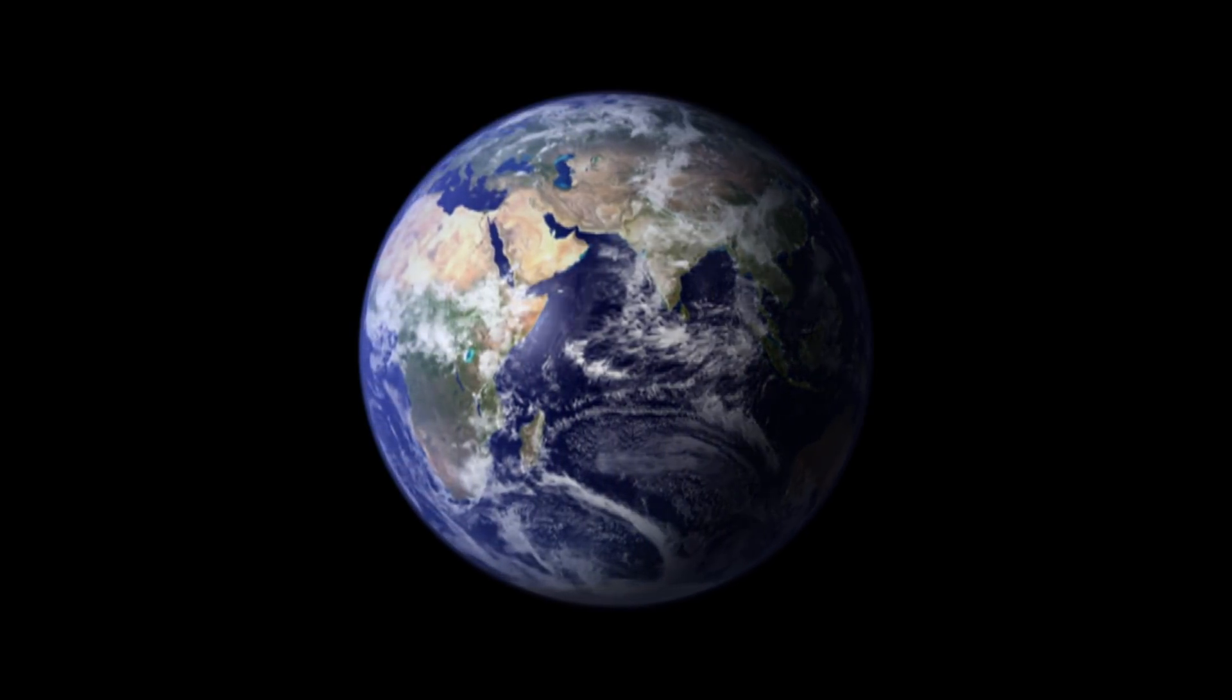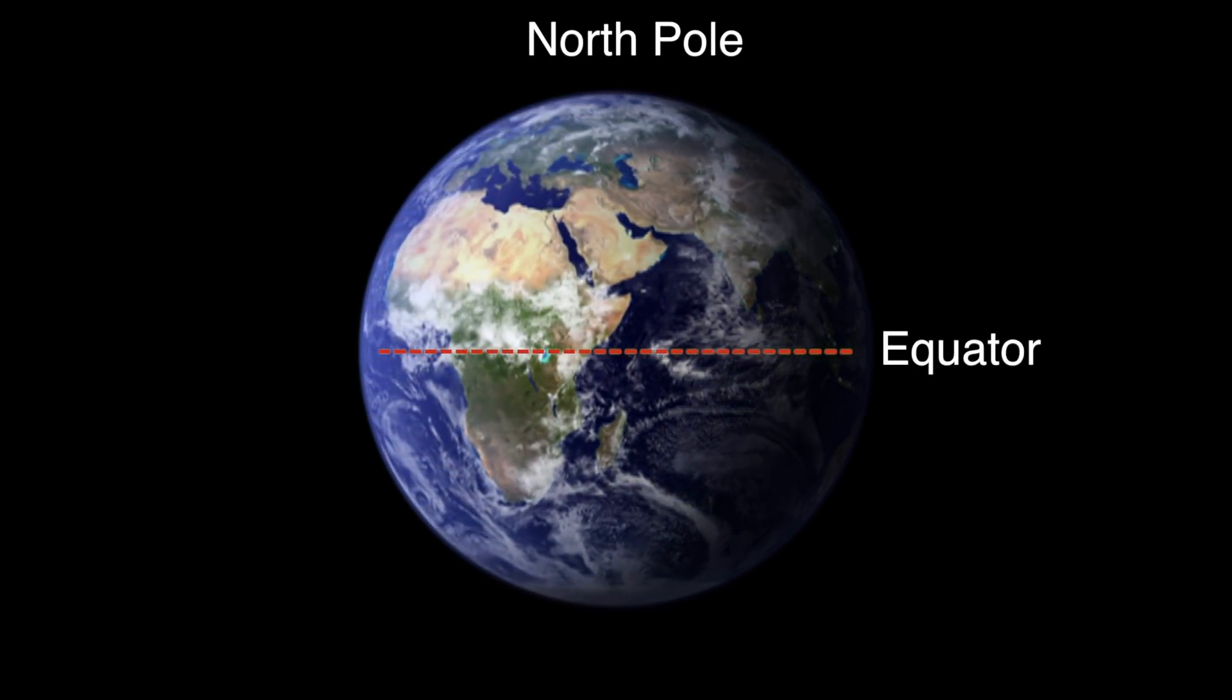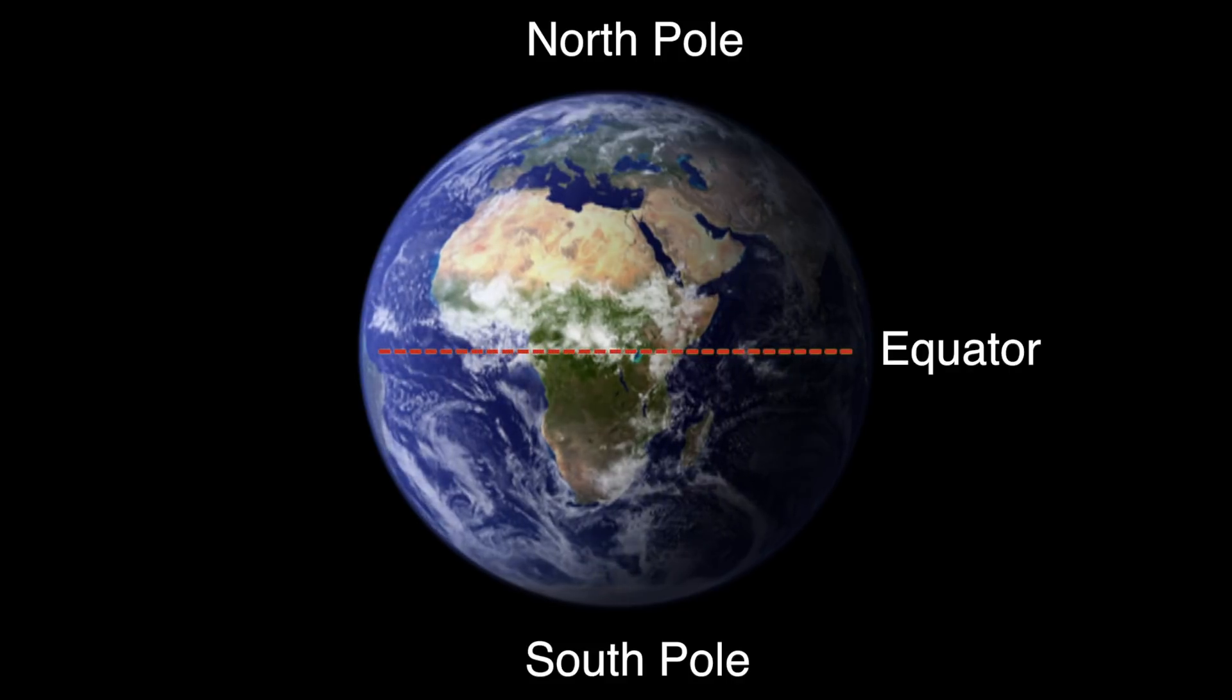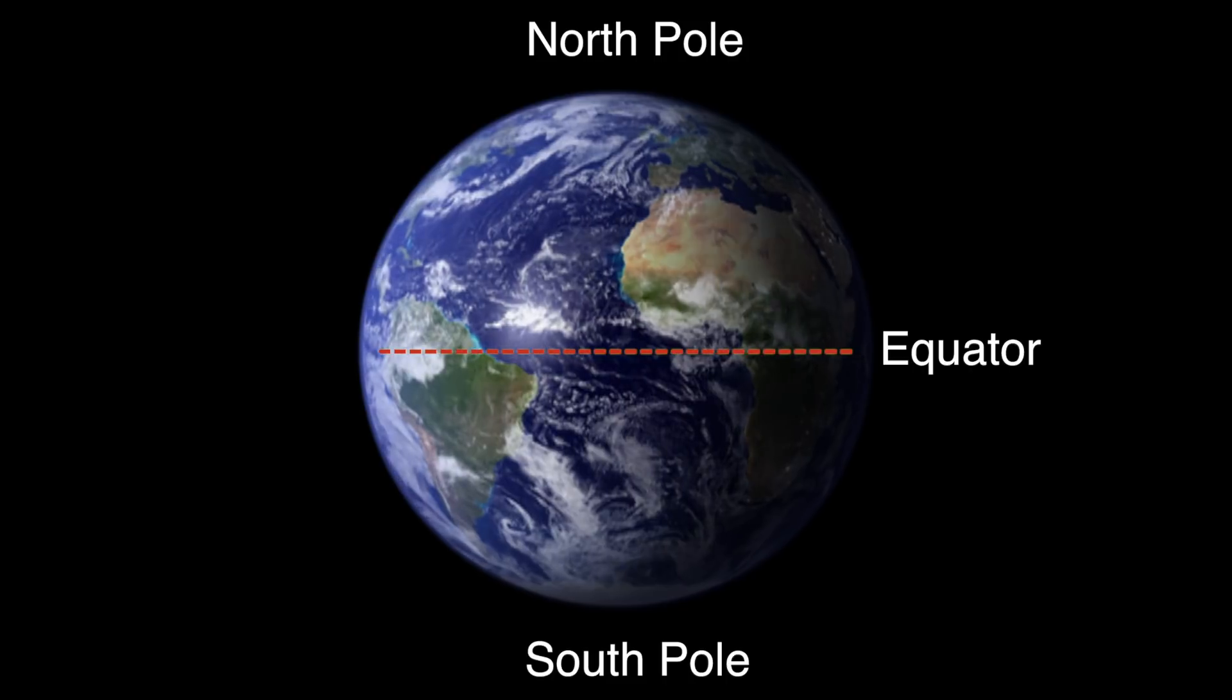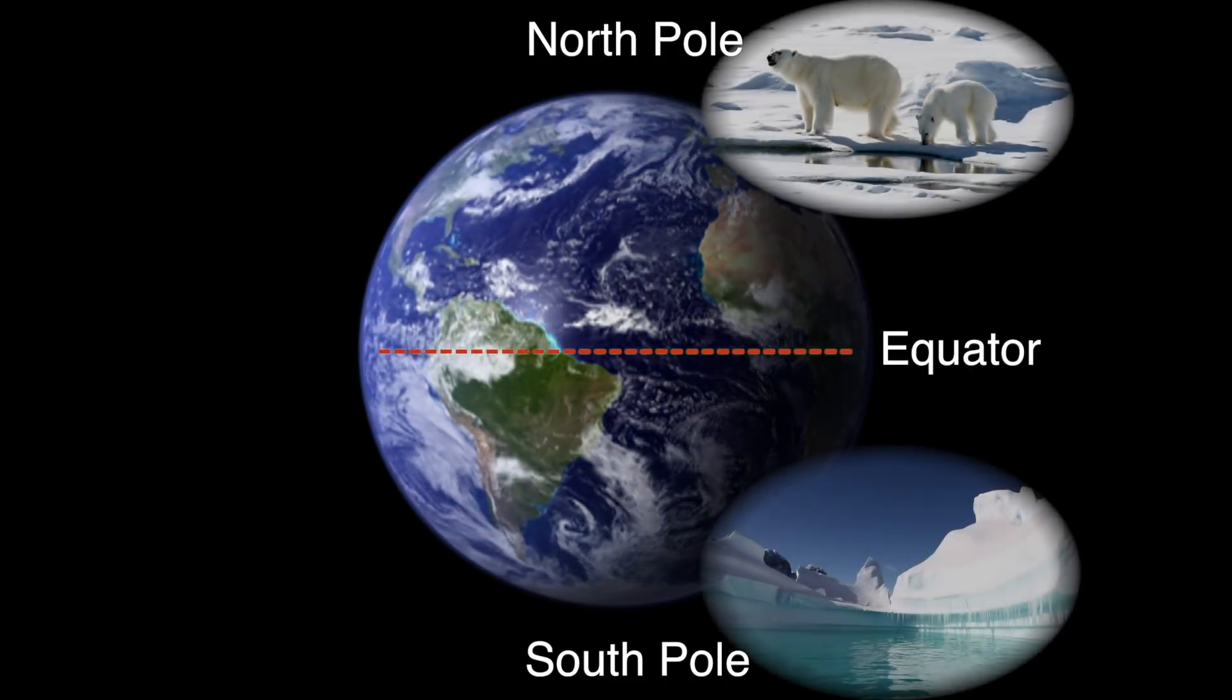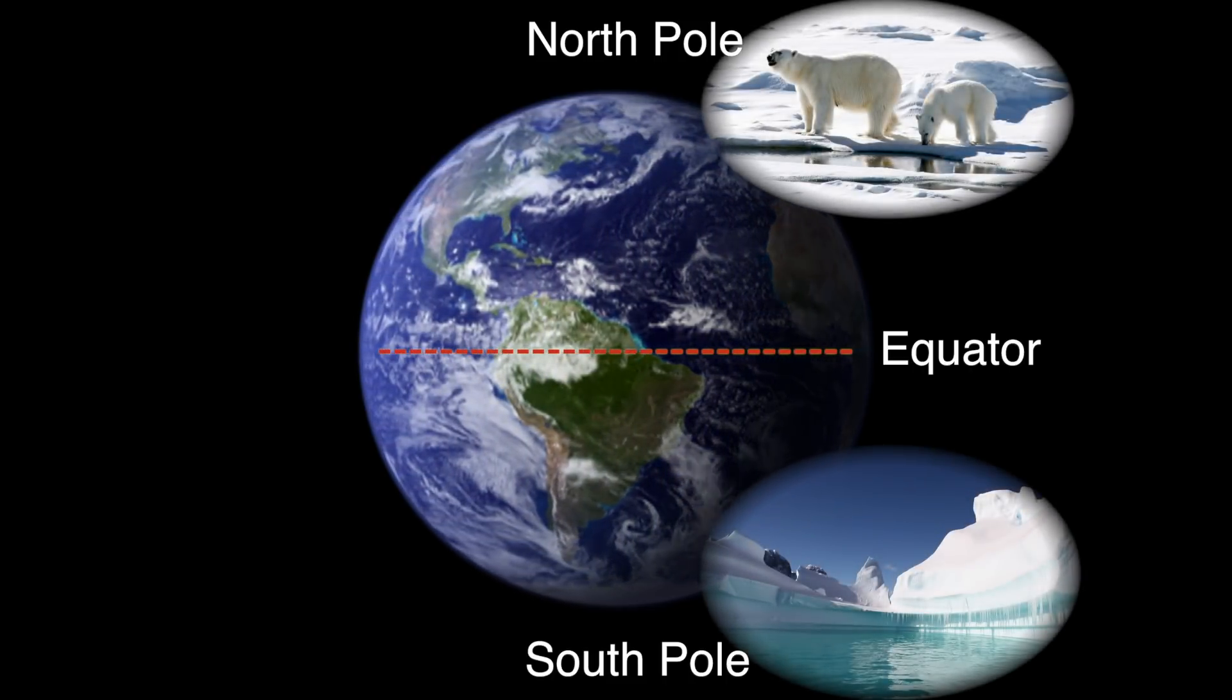Places by the equator, the line between the north half of the Earth and the south half, get much more sun than places by the north or south pole. That's why the equator is so warm, and the poles are so cold and snowy. But why do these equatorial regions get more sunlight?